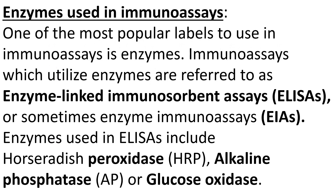The union of enzyme chemistry and the field of immunology has benefited modern clinical chemistry. Those assays which utilize enzymes with antibodies or immunology are called immunoassays, and one of the most popular indicators used in immunoassays are enzymes. Immunoassays which utilize enzymes are called enzyme-linked immunosorbent assays, or simply ELISA techniques, or sometimes enzyme immunoassay. Enzymes used in ELISA include horseradish peroxidase, alkaline phosphatase, or glucose oxidase.